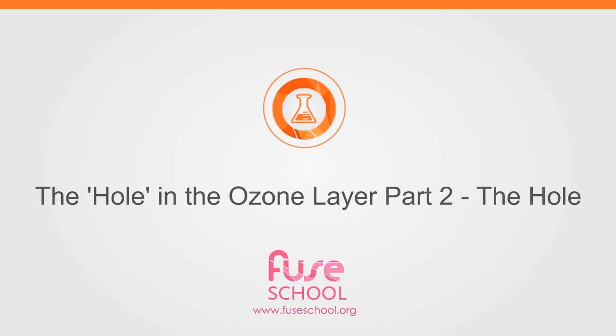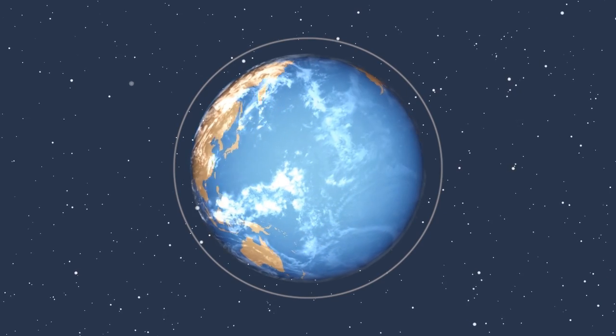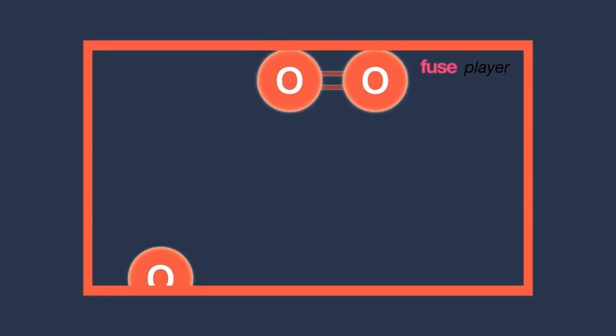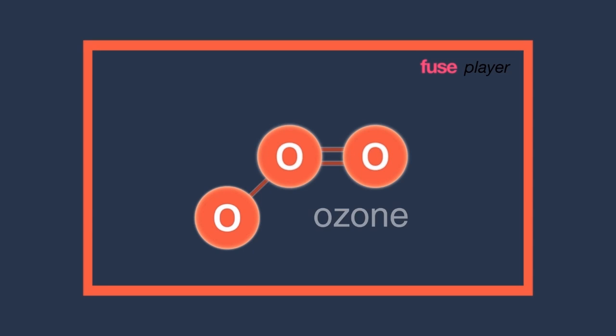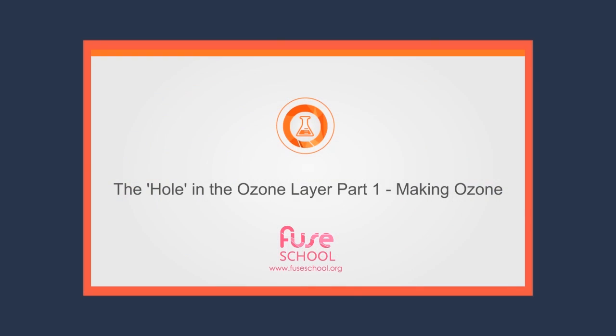In this video you will learn about the famous hole in the ozone layer and why it has got thinner. We will also look at the action the world has taken to restore it back to health. To find out how stratospheric ozone is made and how it stops harmful UV from reaching the ground, view part A of this video.